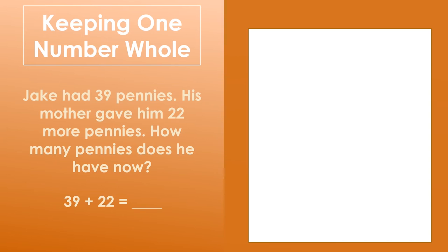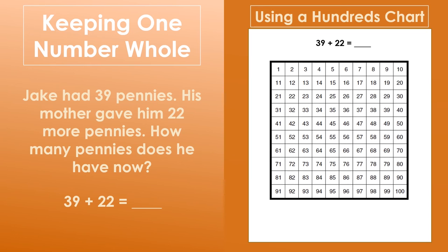Another way we can model the strategy of keeping one number whole is to use a hundreds chart to model our thinking. You can see that we are going to start by shading in the hundreds chart to the number 39, which is the first addend in our equation.